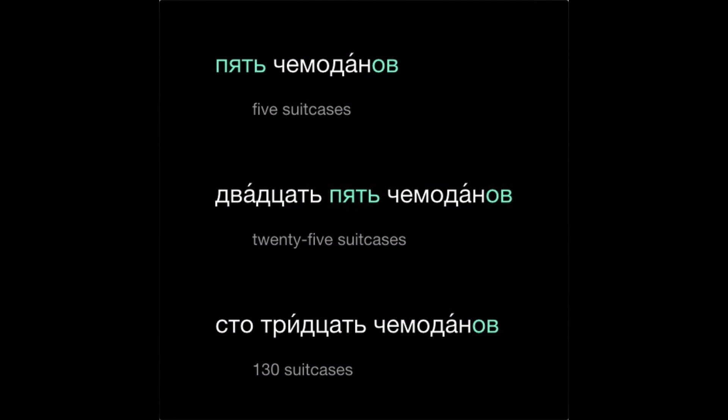And we'll need the genitive plural after the numbers пять (five) through двадцать (twenty), and also for compound numbers that end in five through nine or zero — for example, twenty-five to thirty, thirty-five to forty, forty-five to fifty, etc.